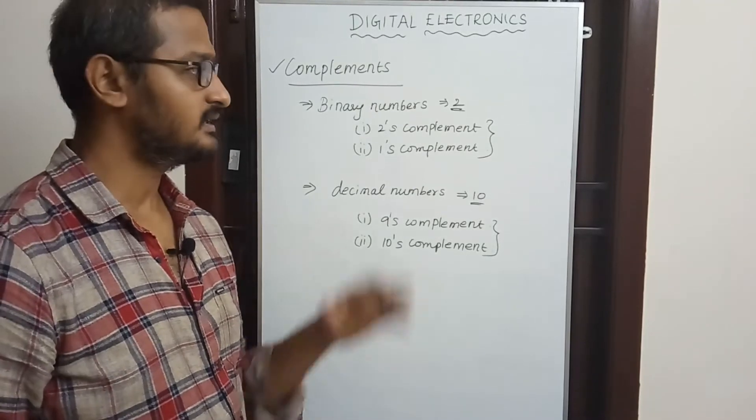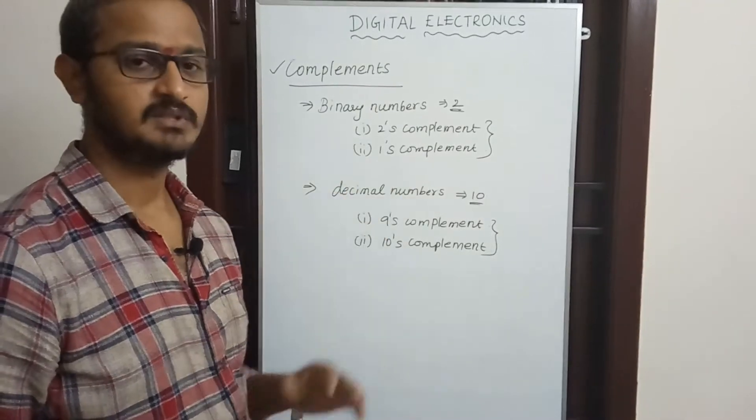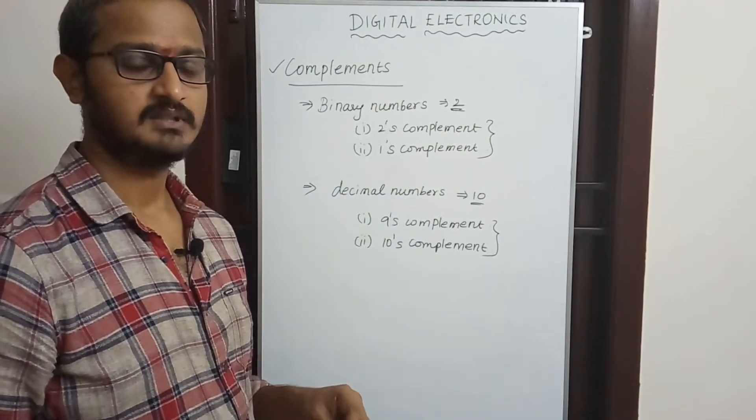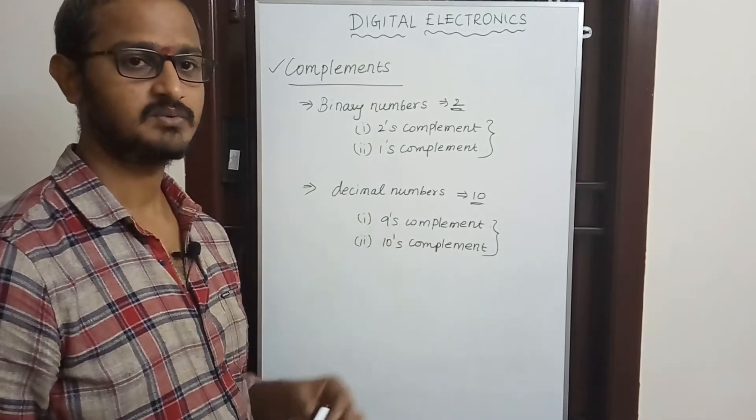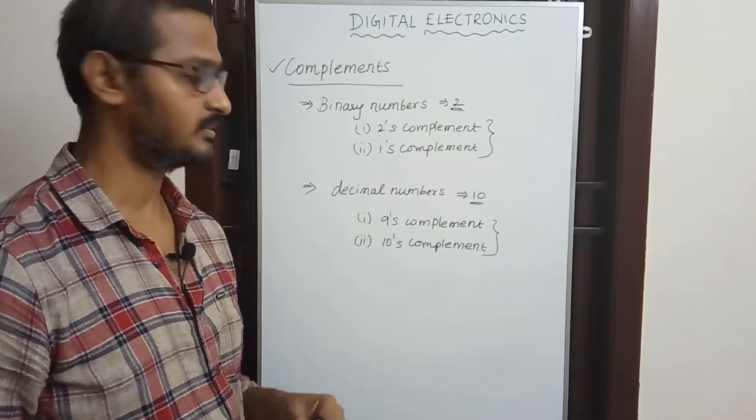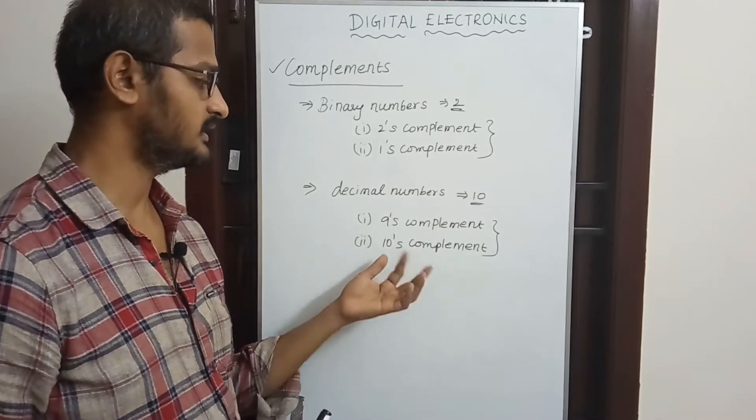It is very easy. For binary numbers, we find the 1's complement. If you add 1 to the 1's complement, it becomes the 2's complement. It is very easy.